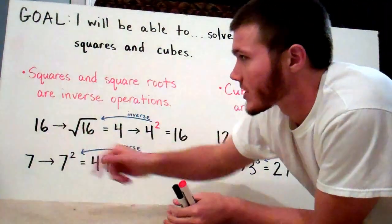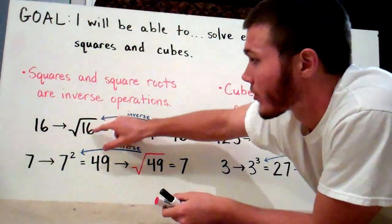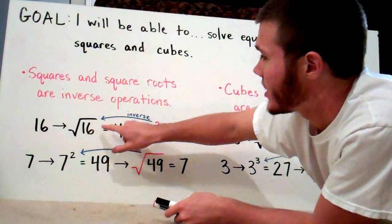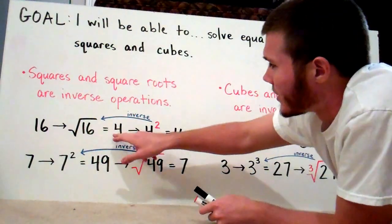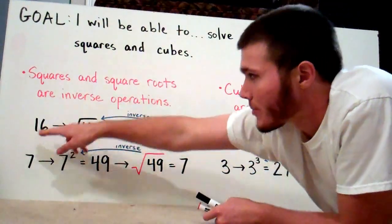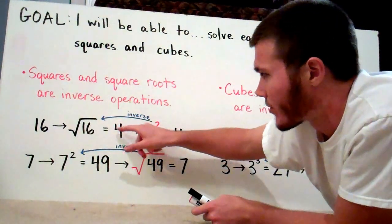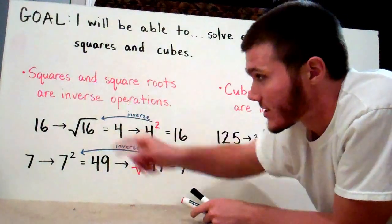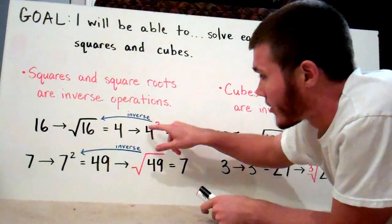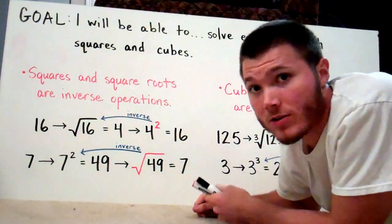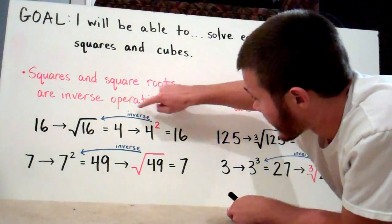Let's say I start with the number 16. I'm going to find the square root of 16. The square root of 16 is 4 because 4 times 4 is 16. But if I want to go back to my original number, I can't do the square root again because the square root of 4 is 2. I want to go from 4 back to 16, so I have to square 4. 4 squared is 4 times 4, which is 16. So these are inverse operations.